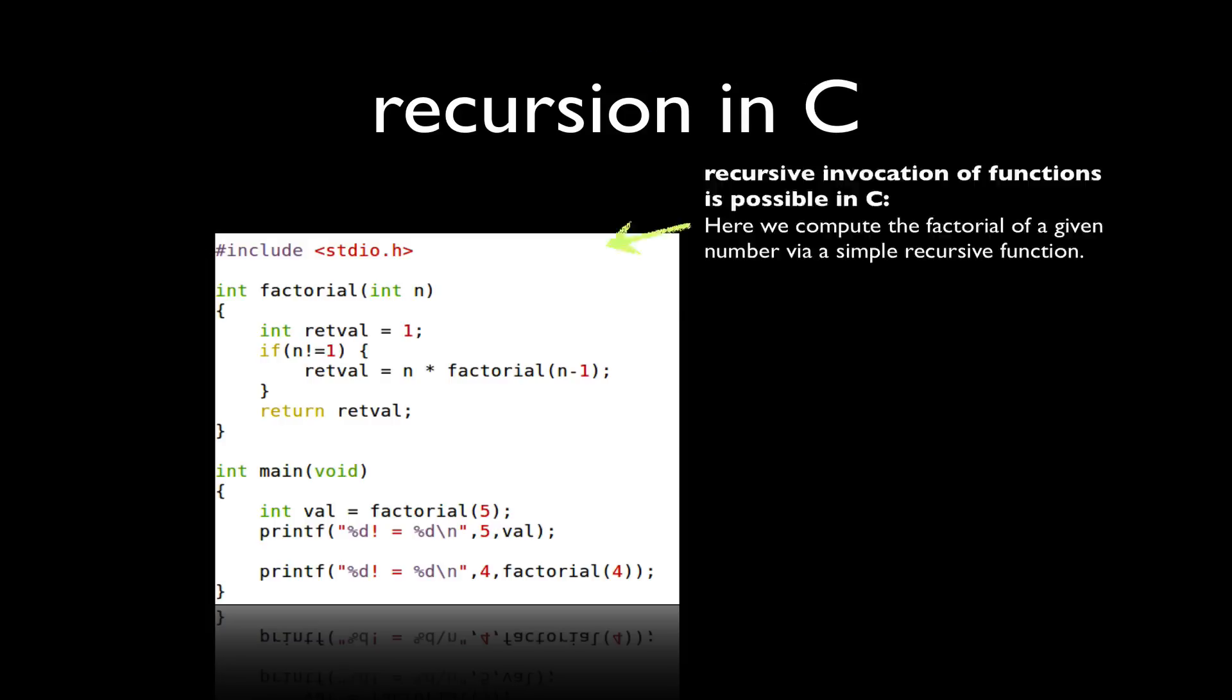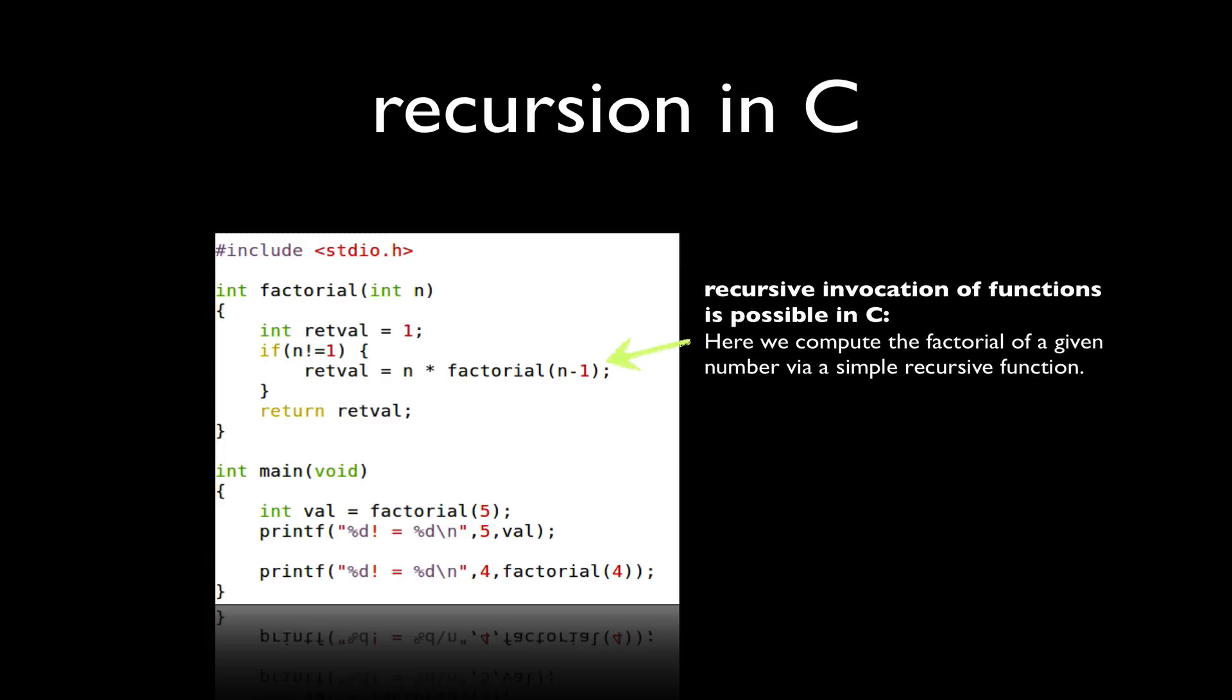For example, here's an example of how we compute a simple factorial using recursion. So I've defined a function called factorial that takes an int and it checks whether or not the value coming in is 1. And if it is not 1, it's going to return n times factorial n minus 1. There's our recursive call.